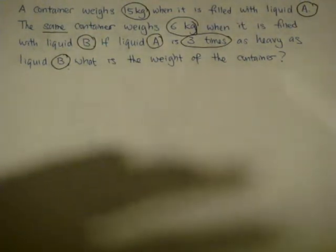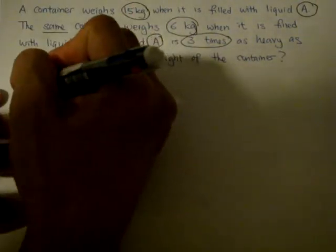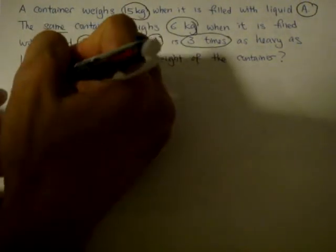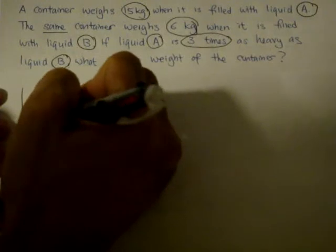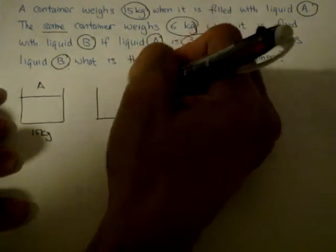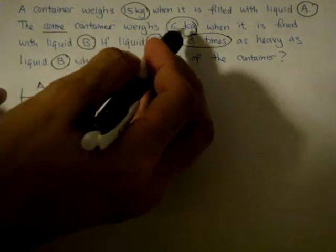So first container - liquid A, 15 kg, so roughly you will fill up until here. Liquid B, about here, slightly less - 6 kg.